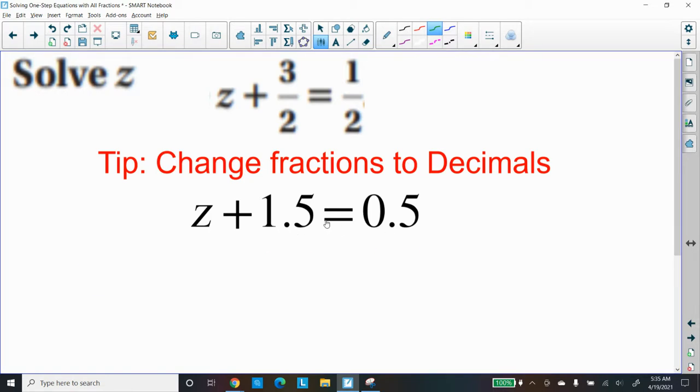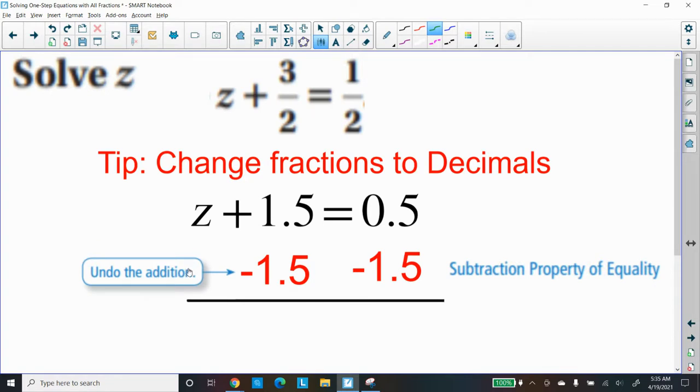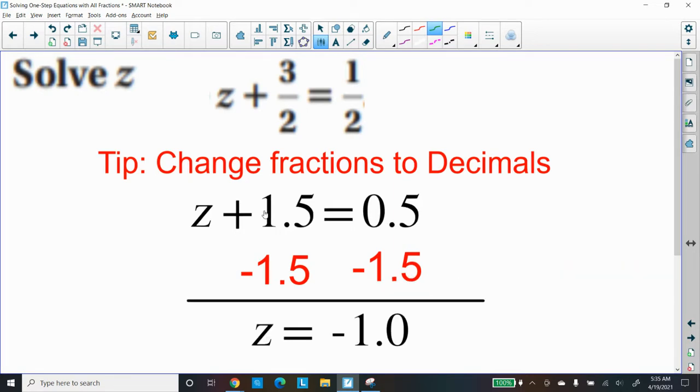Let's see how we do it. We use the additive inverse, or undo the addition, which is by subtracting 1.5 from both sides. That's our subtraction property of the equality. And what happens over here, the plus 1.5 cancels out with the negative 1.5 or the minus 1.5.